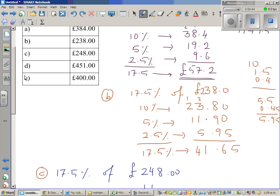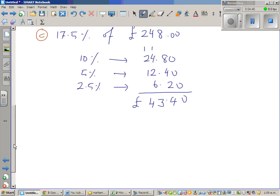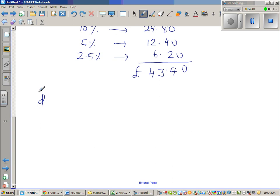Let me finish it. So D is £451. So D, 17.5 percent of £451. So again 10 percent is one tenth which is £45.10.